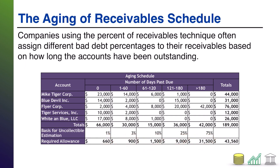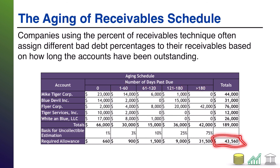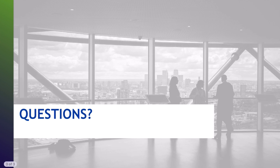Then I simply add all of those together, and that tells me the total allowance for doubtful accounts that I need. This is basically doing a percent of receivables estimation to calculate your bad debts — just using a percent of receivables that's risk-adjusted by the age of the receivable to come out with the end allowance balance that you need. That is it for an aging of receivables schedule. I hope you found this helpful, and I hope you join me for another video.